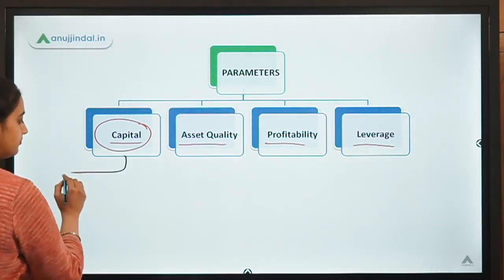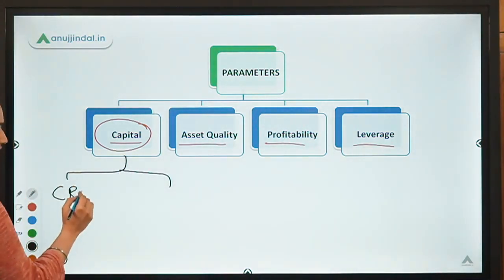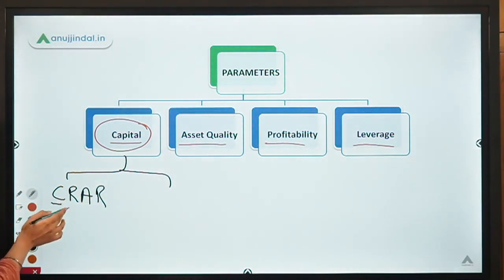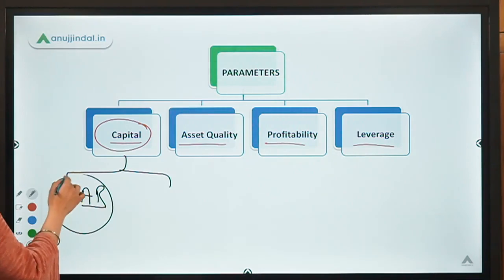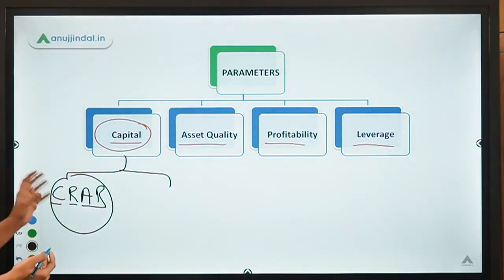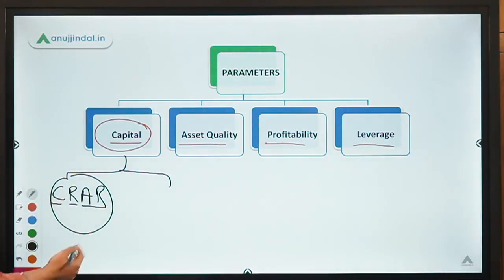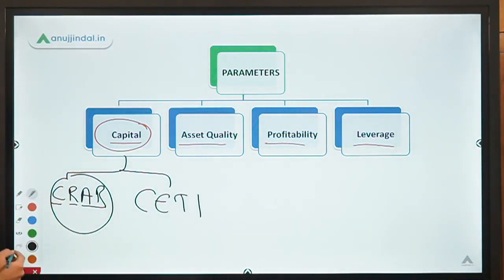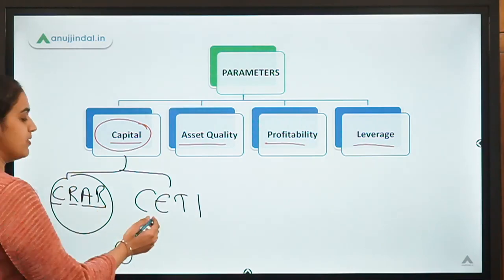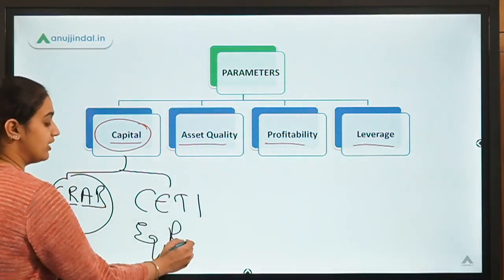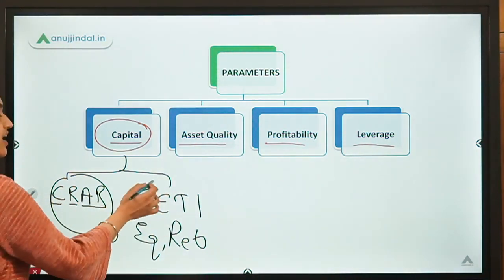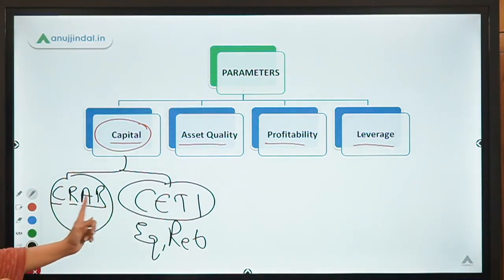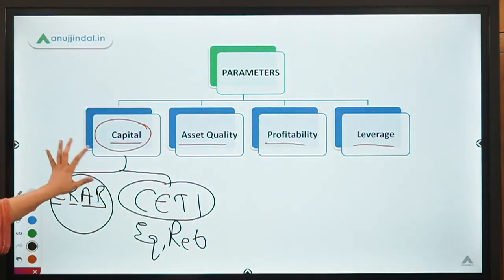The first ratio is CRAR — Capital Risk Weighted Assets Ratio, also called the Capital Adequacy Ratio — which determines how much capital you are maintaining against your risk weighted assets. The second is your Common Equity Tier 1 ratio, which determines how much Tier 1 capital comprising equity and retained earnings is maintained by banks against their risk weighted assets. These two ratios are used to assess the capital adequacy of banks.